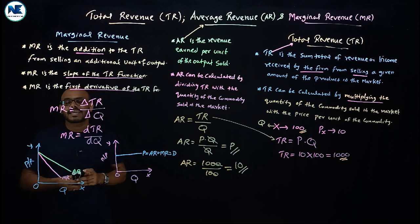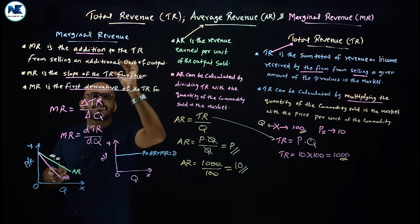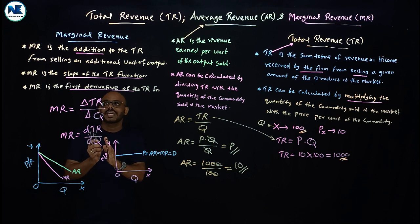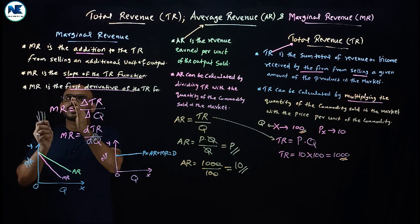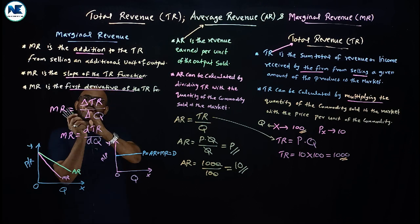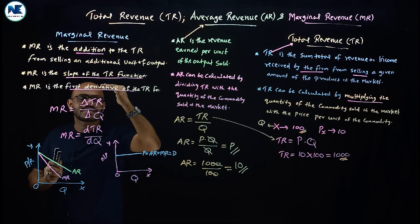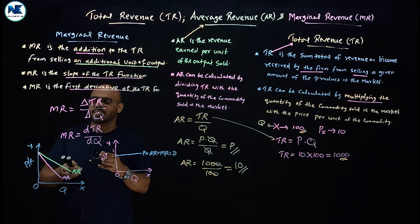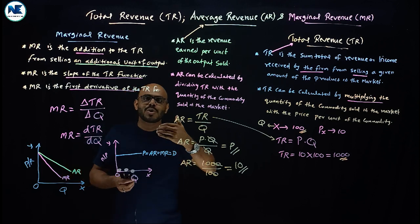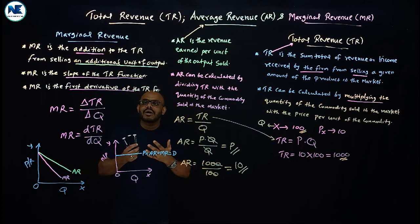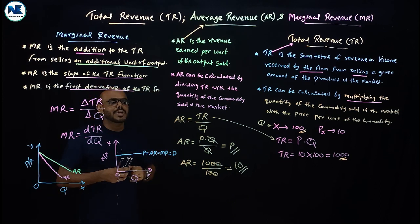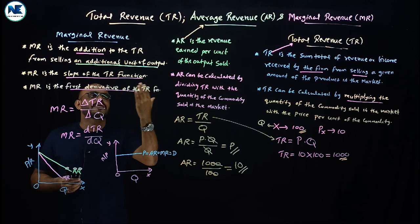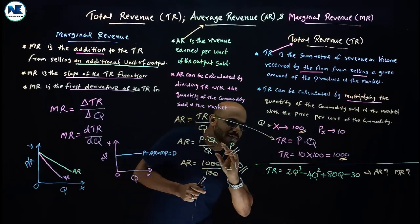To summarize: marginal revenue is the net addition or addition to total revenue from selling an additional unit of output, an extra unit of output. When one extra unit is sold in the market, the resulting change in total revenue is the marginal revenue.